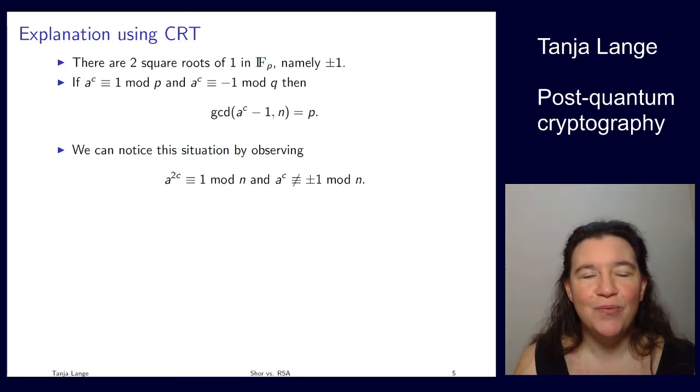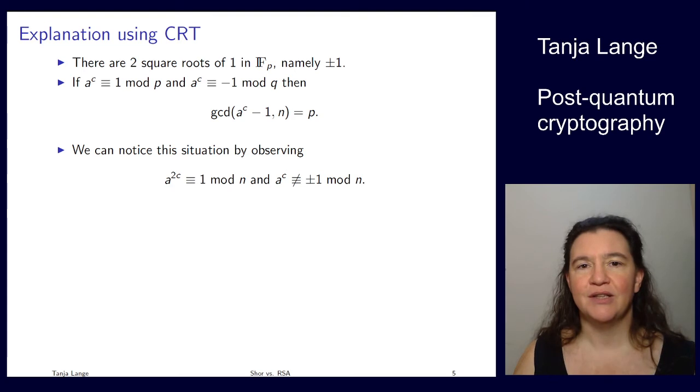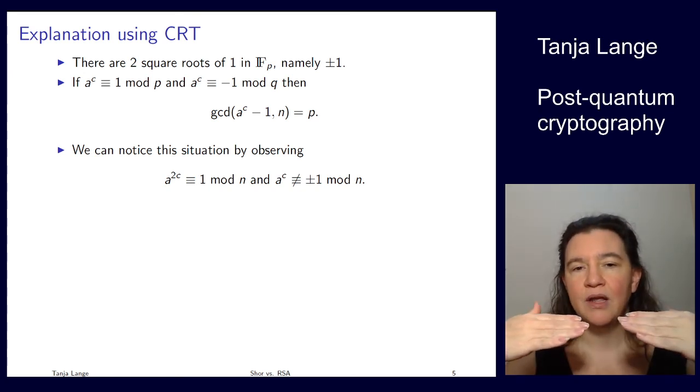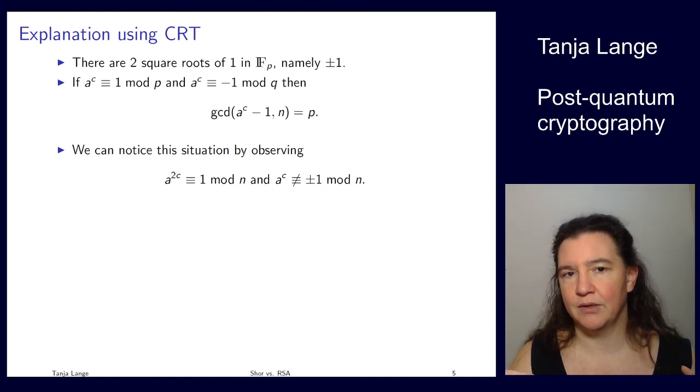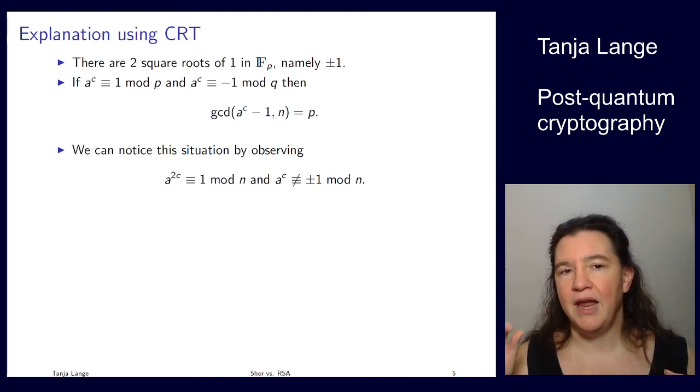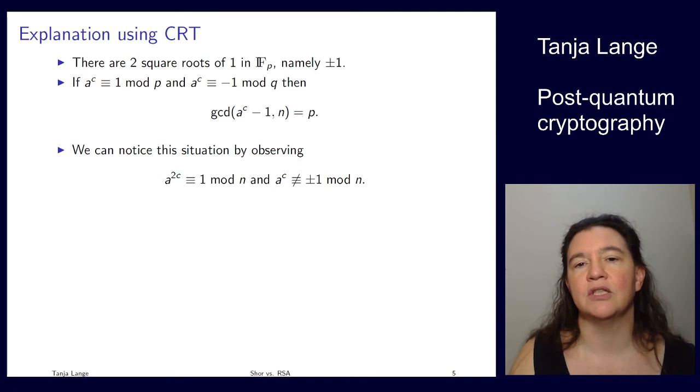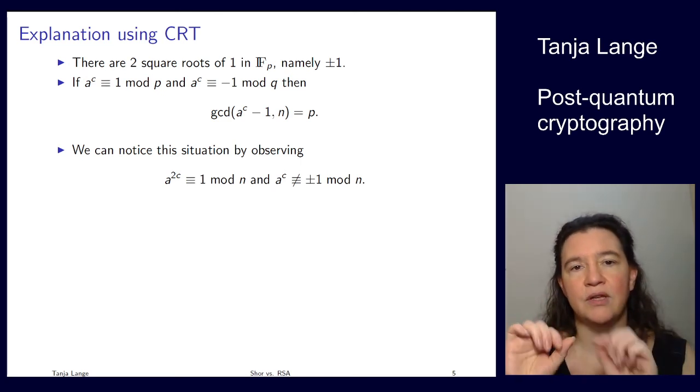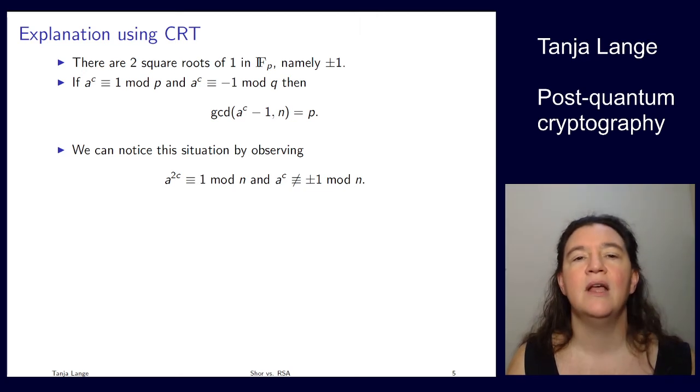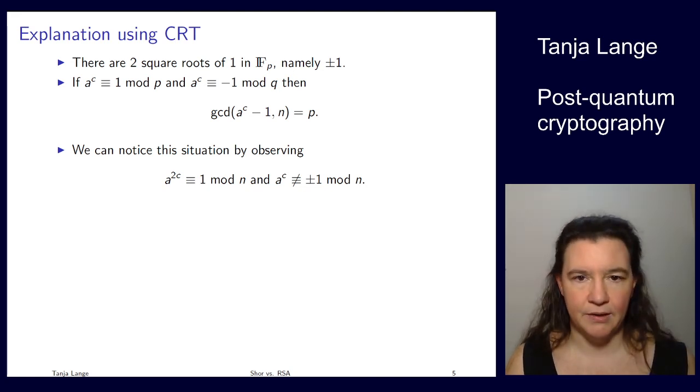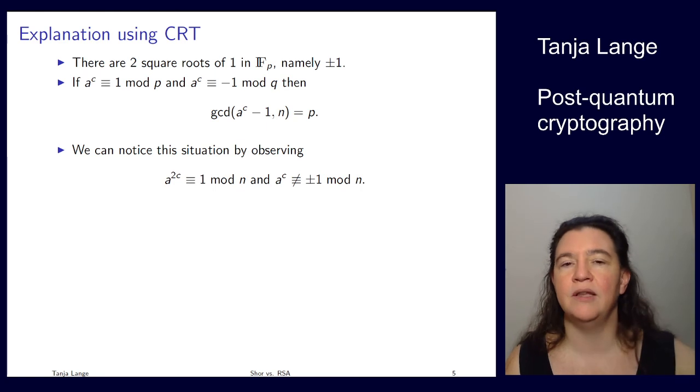So how do we notice this? I mean, if we already know p and q, then we have already solved the factoring. So we have to go through something which we can observe modulo n, and that is what I said on the previous slide. We're observing that we squared something and reached 1, where the previous result was not +1 or -1. So the a^c being +1 mod p and -1 mod q is exactly the situation that a^c is not +1 or -1 mod n. So if you combine these two things with CRT, you're not getting +1 or -1. However, the square of this a^c, so a^(2c), gives you +1 mod n. And that is what you're running through in the steps with Shor.